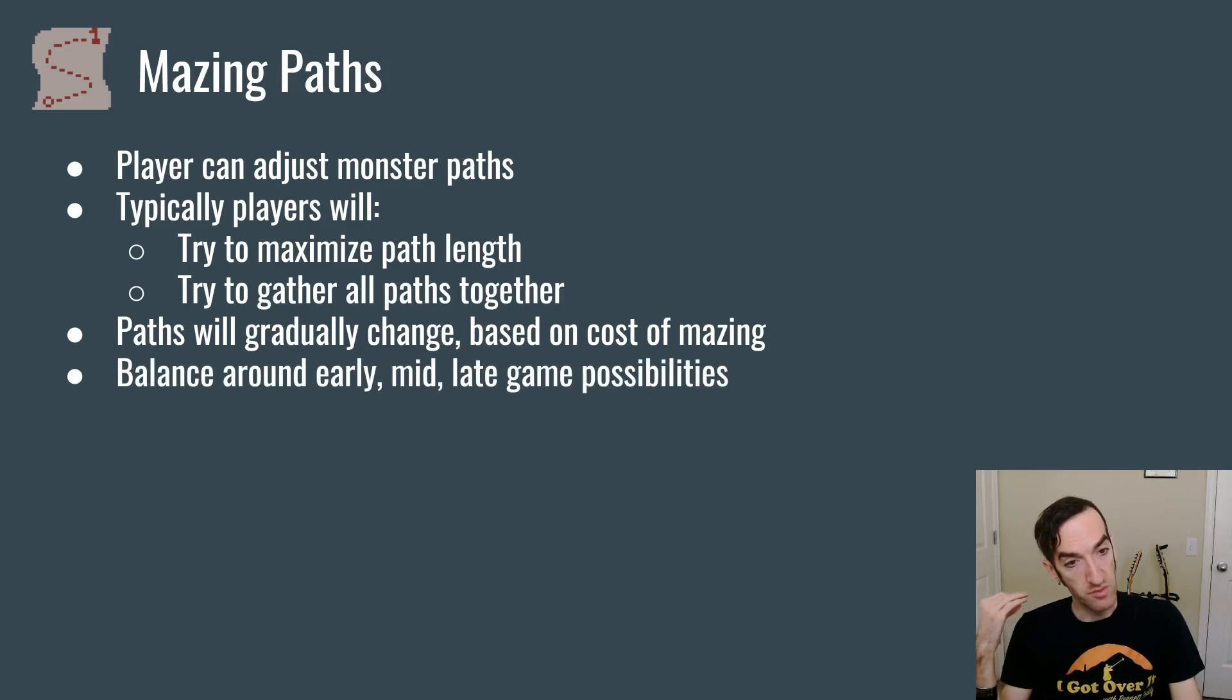Therefore you should balance a map around the possibilities that exist early, mid and late game. So early game, you can think that the players don't really have much control over the maze. Monsters are typically going to be following the paths that they started out on. But as the game progresses, players will be more and more specific about exactly where they want the monsters to go, and thus their maze will be more and more sophisticated.